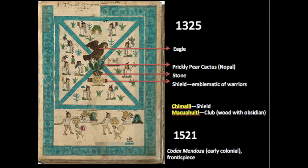The upper register has diagonal lines dividing it into four quadrants. The quadrants contain various men sitting in the position typically used to depict men, seated on reed mats that are emblems of leadership — signifying they are kings or leaders. They happen to be the Huey Tlatoanis, and I'll talk more about that in the next few slides.